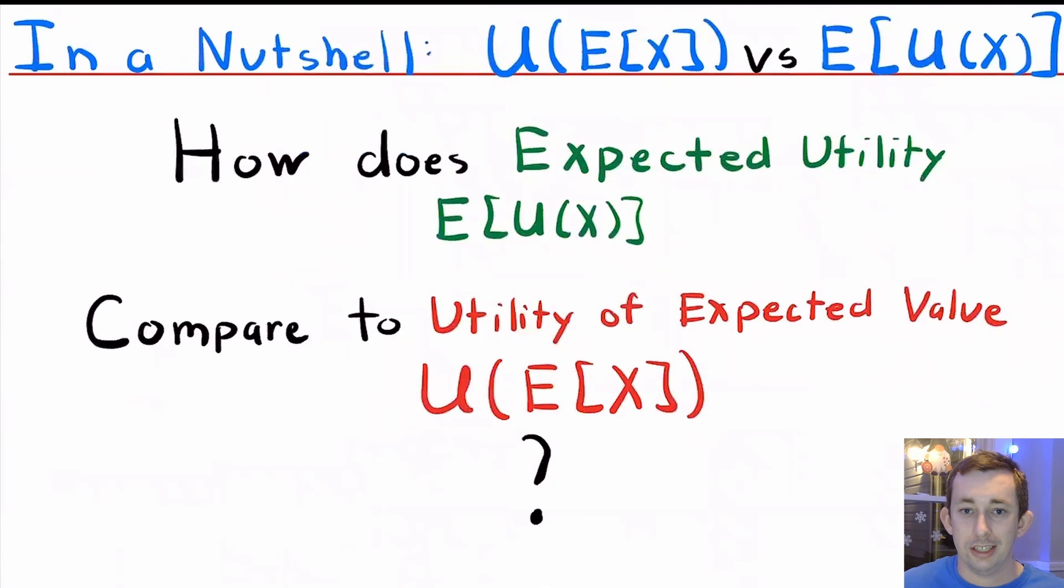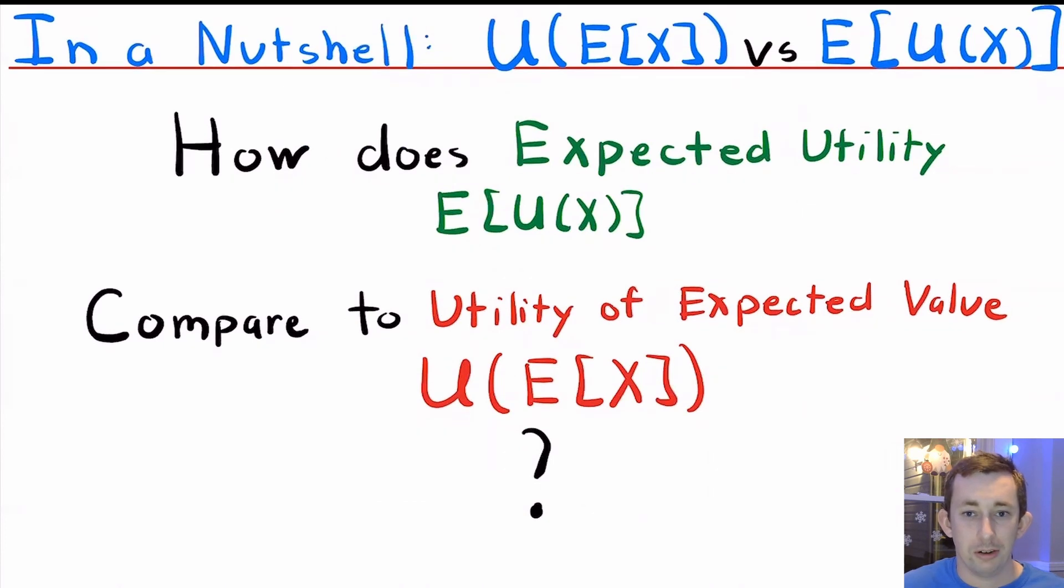Now in a nutshell, Jensen's inequality is all about the expected utility of a gamble compared to the utility of the expected value. Now let's jump into the graphical example. I'm going to show you three graphical examples where it's going to be the same gamble, but three different types of risk aversion.